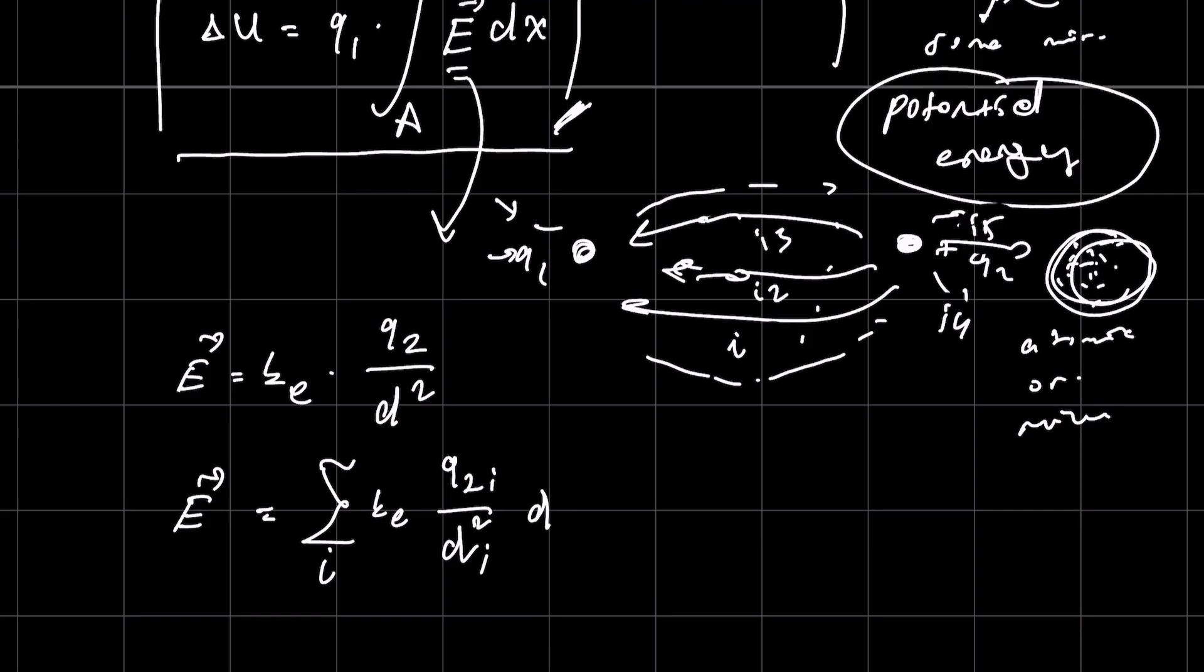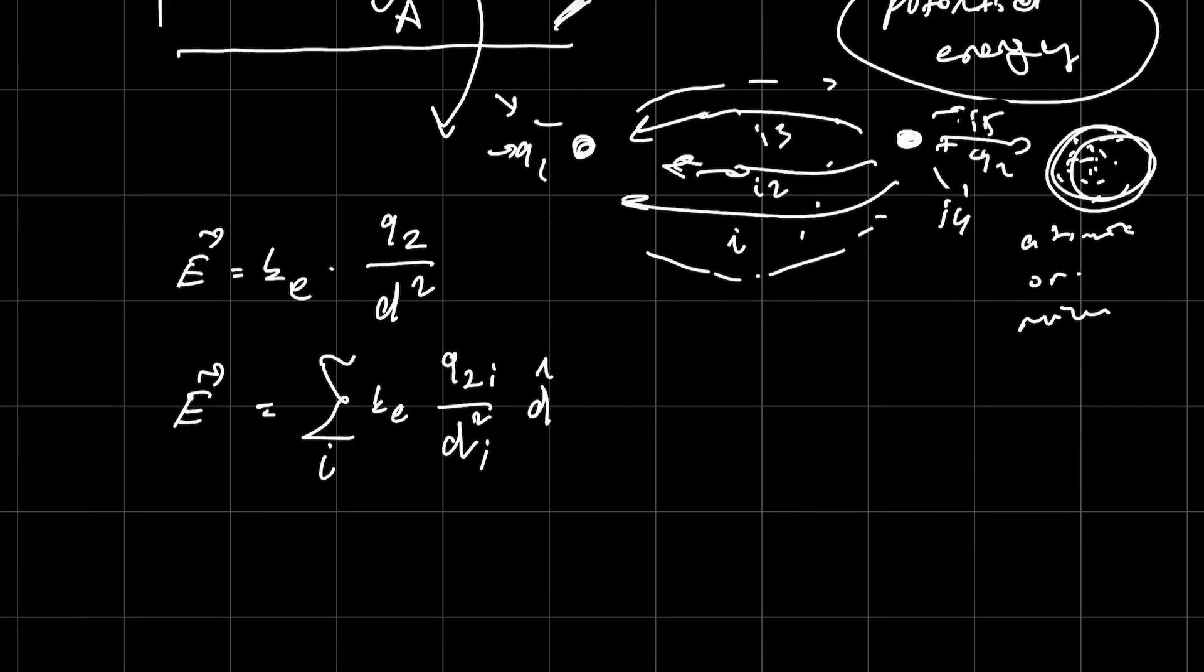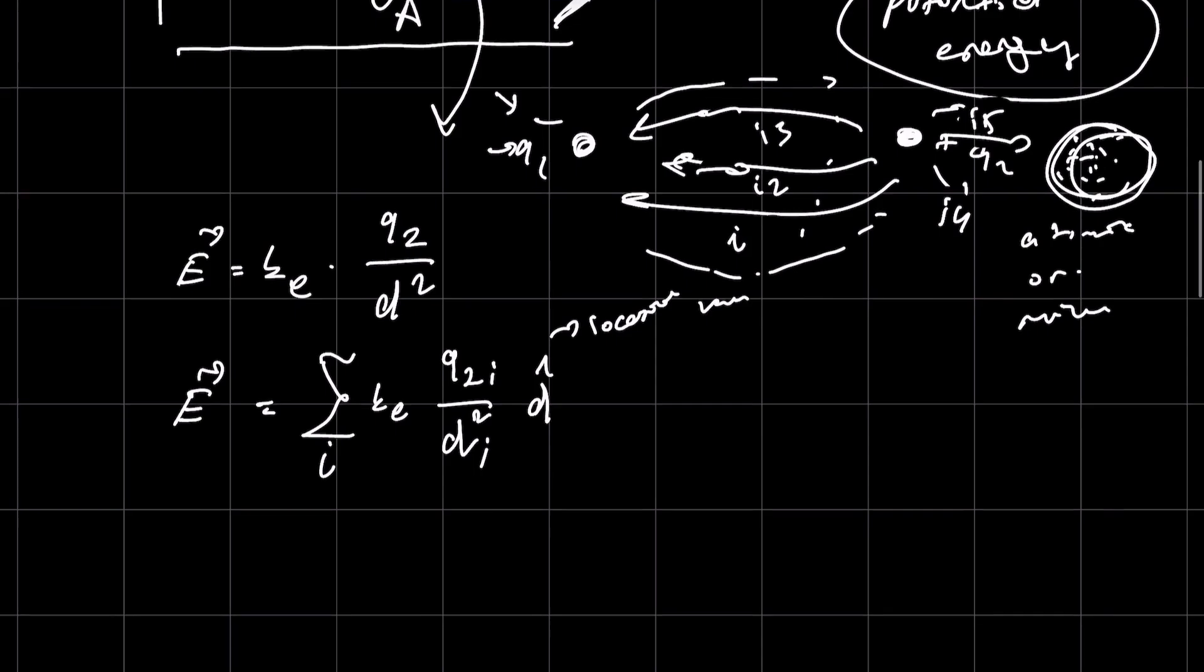If we continue with the formula, here is the position vector. Since Ke is a constant, it can again be taken outside. This gives us the total electric field formula.